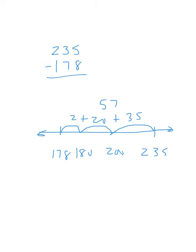Another way we can look at it this way. 178 is 22 away from 200. So this is keeping a constant difference. I could also add 22 here. This gets me to 257. If I subtract 257 minus 200, I'm left with 57.